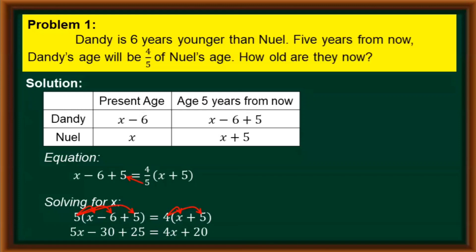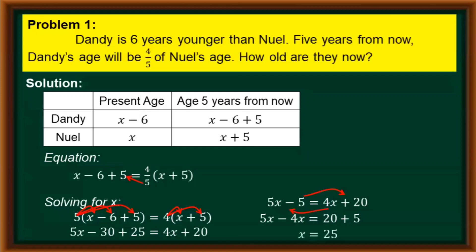Notice that on the left side, we can combine negative 30 and positive 25, so that becomes 5x minus 5 equals 4x plus 20. We collect the terms with variable x to the left side and the constant terms to the right side. We transfer negative 5 to the right and 4x to the left, giving us 5x minus 4x equals 20 plus 5. On the left side, 5x minus 4x equals x. On the right side, 20 plus 5 equals 25. So, x equals 25.